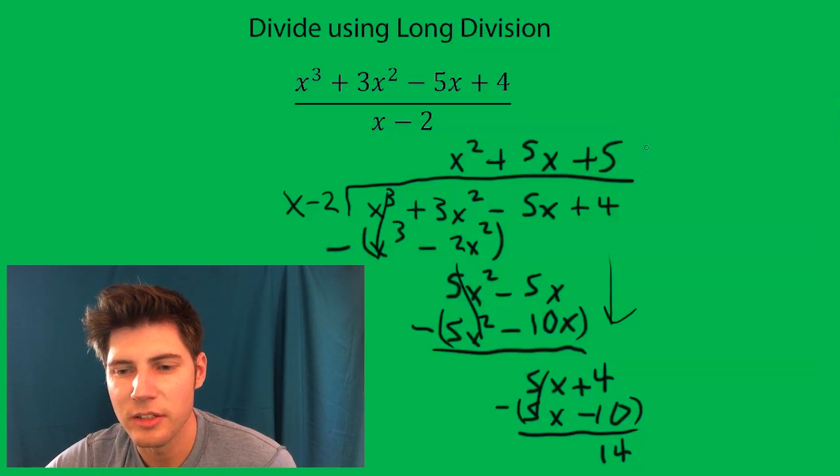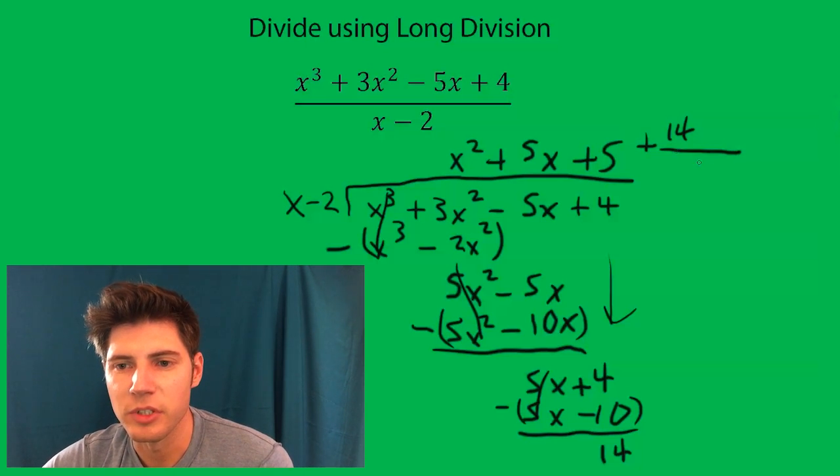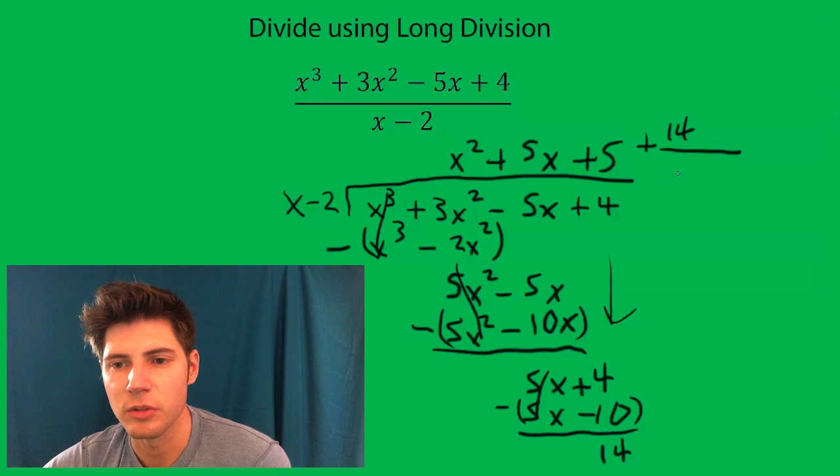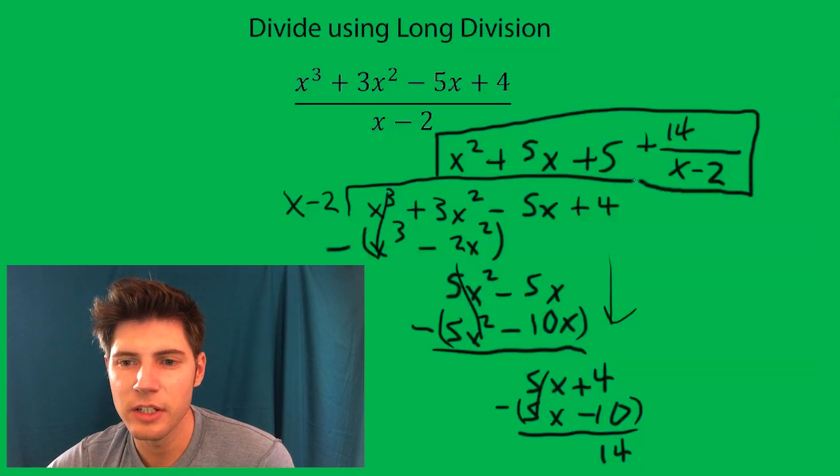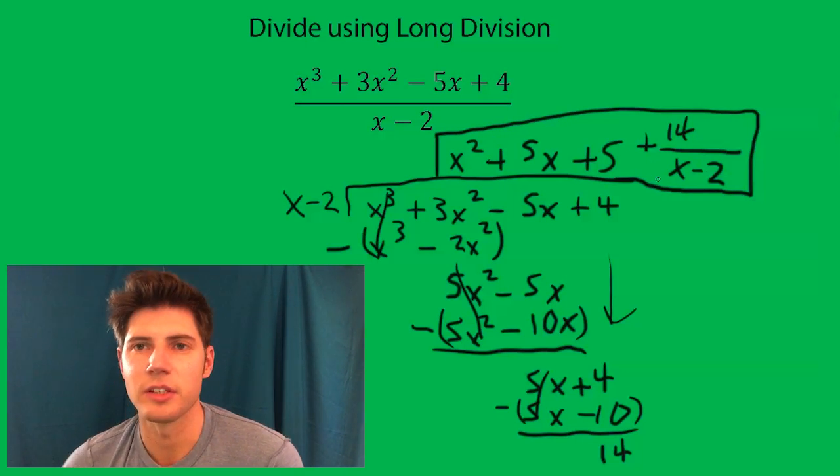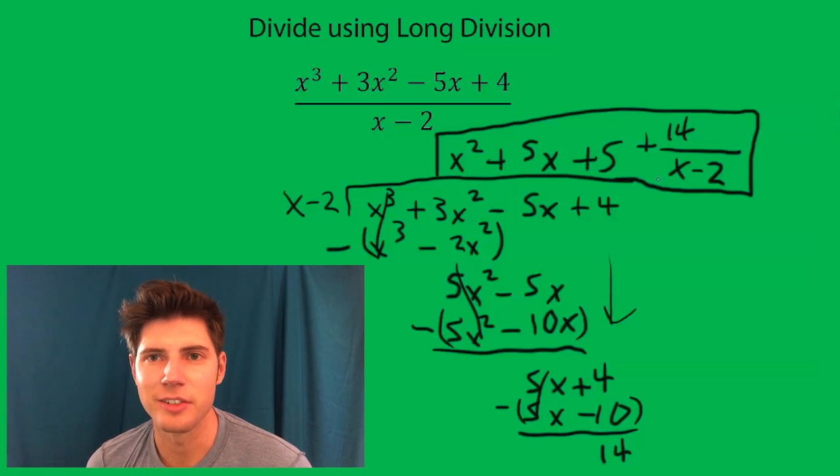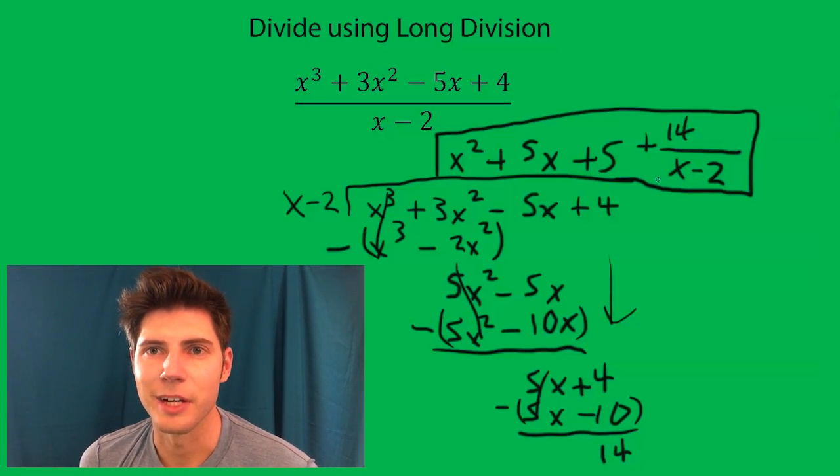But the way we state remainders in these is we say plus 14 and that 14 we weren't able to divide by this. So we're just going to leave it as a fraction at the end. This right here is the official answer. It goes in evenly with this stuff and then this is what's left over. So I hope that makes sense and I will talk to you soon. Bye.